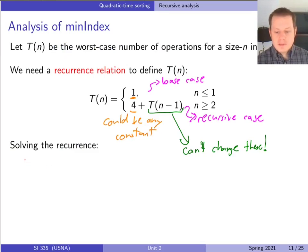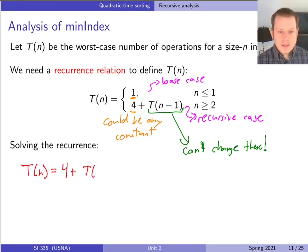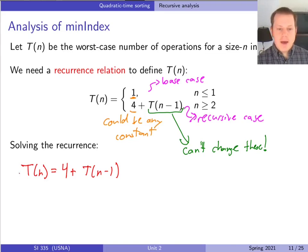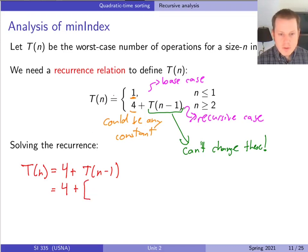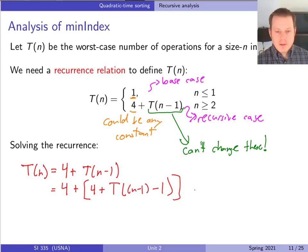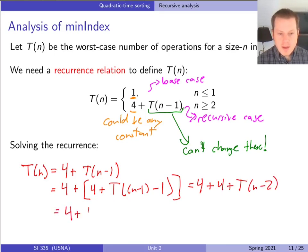To solve this, the standard technique is to expand it out. T(n) equals four plus T(n-1). We substitute in the same formula for T(n-1): T(n-1) equals four plus T(n-1-1), which simplifies to four plus four plus T(n-2). You should already start to see the pattern: each time we're adding four more and the argument of T is getting decreased by one. The pattern emerging is four times k plus T(n-k) — each time we're decreasing the argument by one and adding another four.